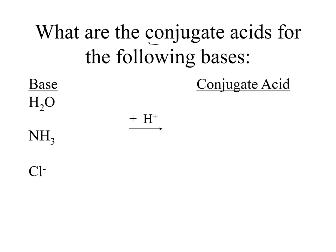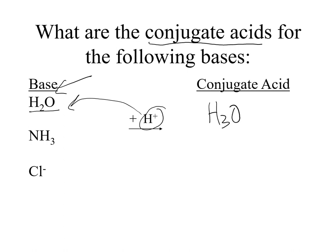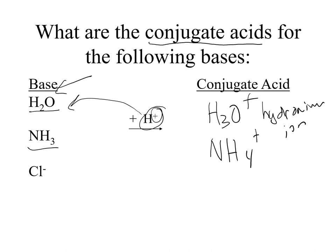Now let's determine the conjugate acids for given bases. The first base is water — it has two hydrogens. A base accepts a hydrogen ion, so we add one more: H3O. Water is neutral; adding a plus one charge gives us hydronium ion. Next, NH3 ammonia: adding another hydrogen gives NH4. It's neutral, so adding a plus charge gives ammonium ion, NH4+. For chloride ion, adding an H+ to Cl- gives HCl. The plus and minus charges cancel out, giving a neutral compound.